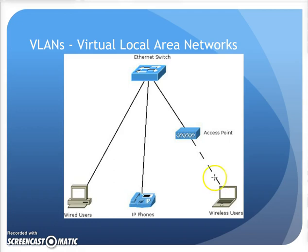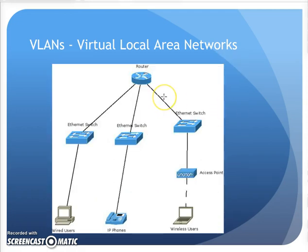Let's take a simple example and start thinking about why we'd go to the trouble of doing this VLAN thing. Let's say I have a network environment where I have a switch and a couple different types of things plugged into it — desktop users, IP phones, and wireless users all into the same switch, which is not uncommon at all. If I wanted to separate them out and keep their traffic separate from each other for security, traffic, or filtering reasons, I could do this.